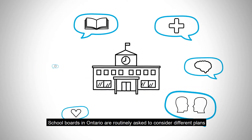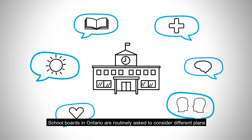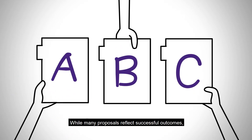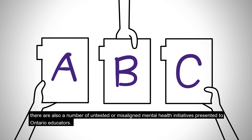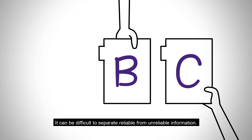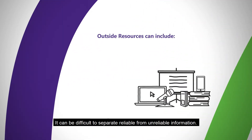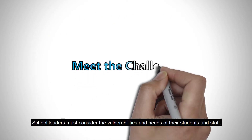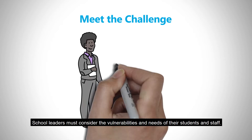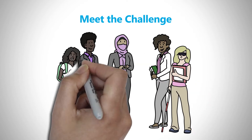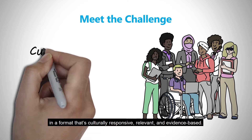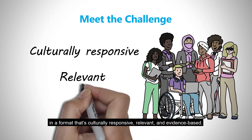School boards in Ontario are routinely asked to consider different plans to support student mental health and well-being. While many proposals reflect successful outcomes, there are also a number of untested or misaligned mental health initiatives presented to Ontario educators. It can be difficult to separate reliable from unreliable information, and it's also important to find the right fit. School leaders must consider the vulnerabilities and needs of their students and staff. Resources chosen must align with school and board plans in a format that's culturally responsive, relevant, and evidence-based.